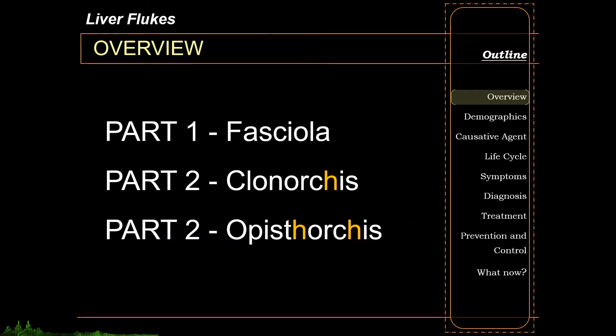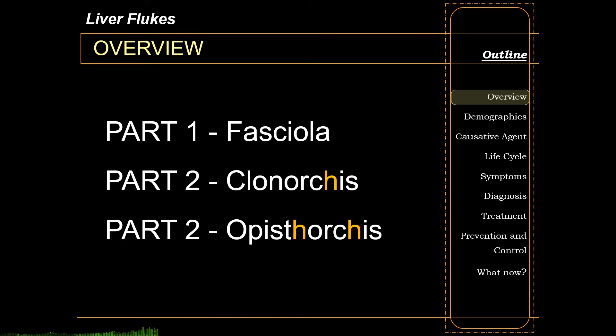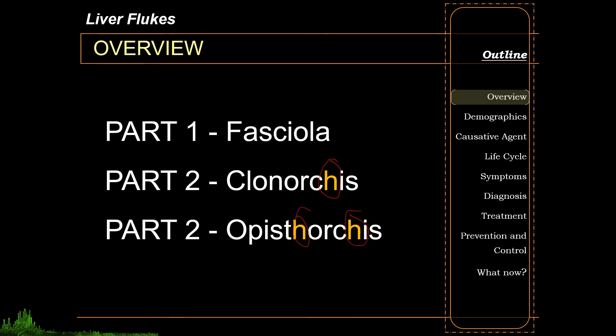Welcome back to the parasitology lecture series. The topic for today is liver flukes. When you talk about liver flukes, you have to discuss the two major classifications: your Fasciola and the Clonorchis/Opisthorchis groups. Please take note of the proper spelling for Clonorchis and Opisthorchis, taking into consideration where the H's go.